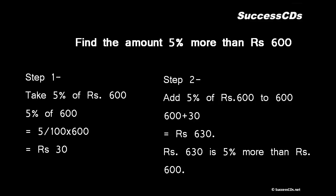Cutting out the common factors we get this amount to be rupees 30. That means 5 percent of 600 is 30. Step 2: we need amount 5 percent more, that means add 5 percent of rupees 600 to rupees 600, which comes out to be 600 plus 30. This is equal to rupees 630. This means rupees 630 is 5 percent more than rupees 600.